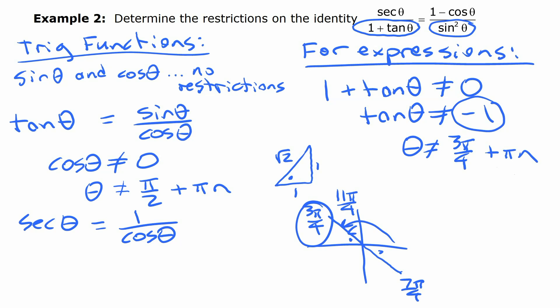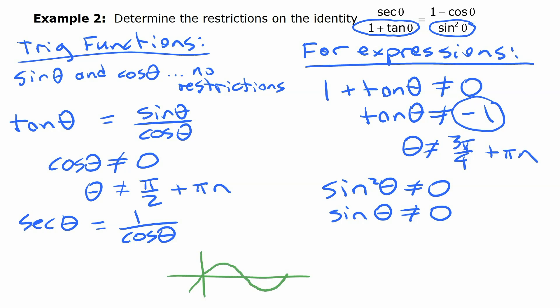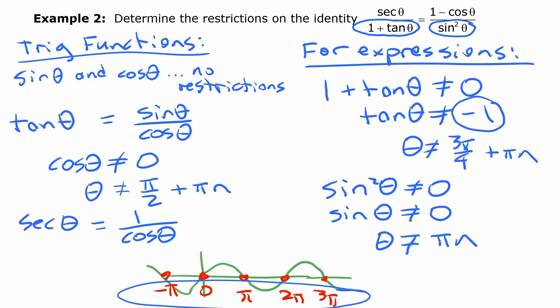Now for the other fraction in the identity, the denominator is sine squared, which cannot be zero. Since sine squared equals zero means sine equals zero, we think about where sine is zero on the graph: at 0, π, 2π, 3π, negative π, and so on. So theta cannot be multiples of π — we write that as πn.